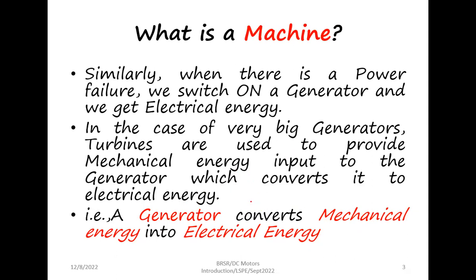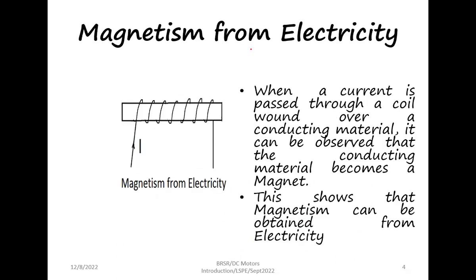Before understanding how the generator works, we will go into the very basic concept of how magnetism is obtained from electricity. Suppose we have a conducting material to which we wind a coil as shown in the figure. If we pass a current through this, we will see that this conducting material acquires magnetism. That means magnetism can be obtained if we have electricity.